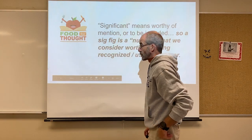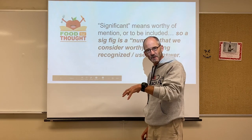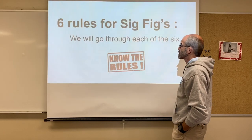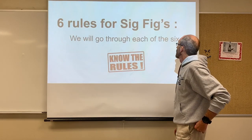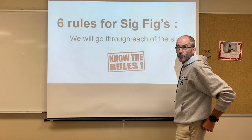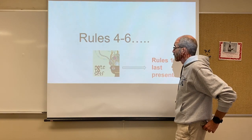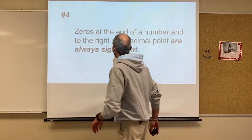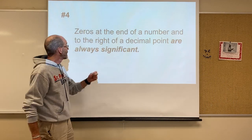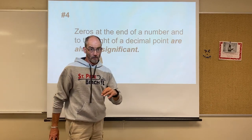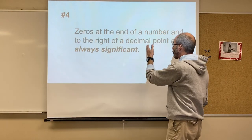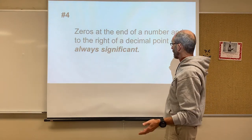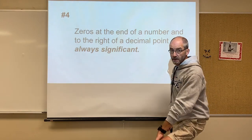Now, what about the next three rules? This presentation covers rules four through six. Rule number four: zeros at the end of a number and to the right of a decimal point are always significant.